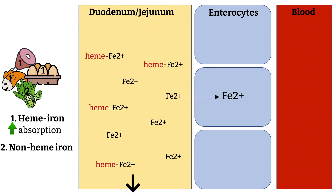Too many things can happen to the ferrous iron, and what happens really depends on your blood iron concentration — it's kind of like a regulatory mechanism. One thing that can happen is that the iron will get converted into its ferric state and then stored inside a protein called ferritin. This is also known as your iron storage. If the concentration of iron in the blood is high, iron would not be released from the enterocytes; it would be stored as ferritin.